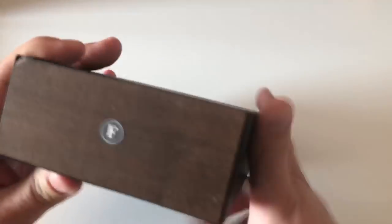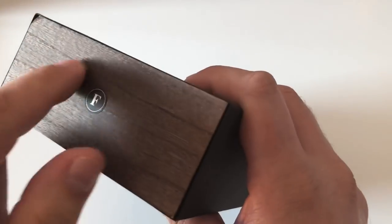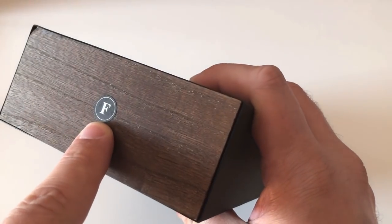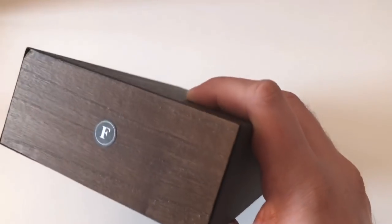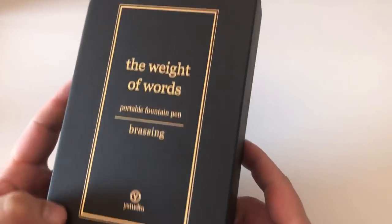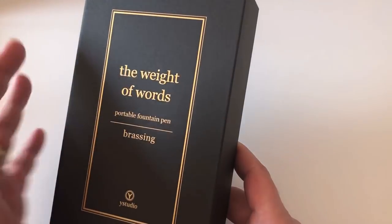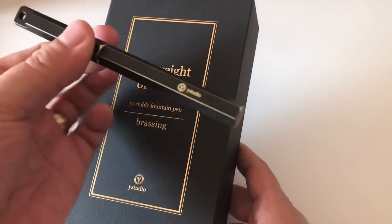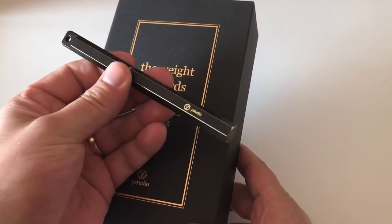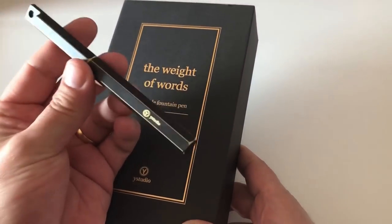It is a wooden box that we have here. You see the wood grain. We have a sticker on here, F for a fine nib. The pen is also available in a medium nib.